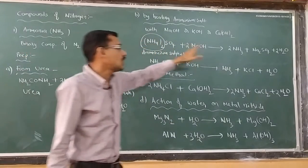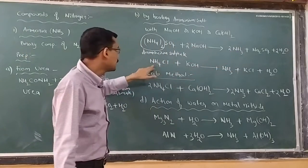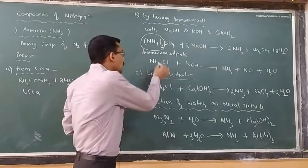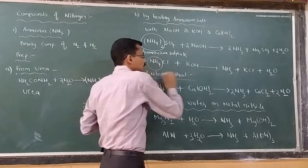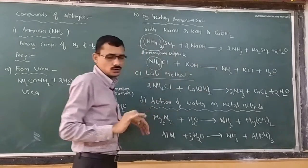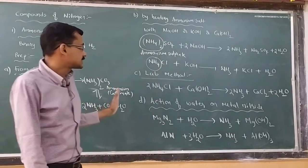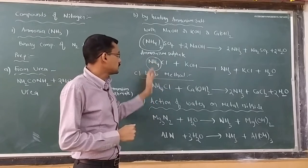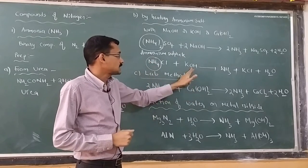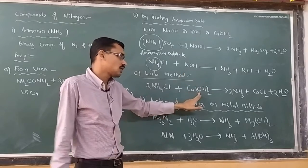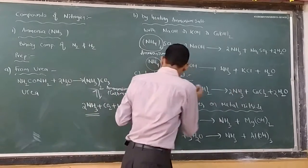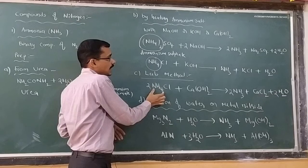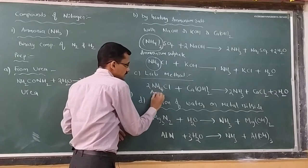Ammonium chloride converting into ammonia. This is very simple to identify. Next, lab method: we take ammonium chloride. Instead of potassium hydroxide, we take calcium hydroxide, which gives ammonia. Ammonium chloride is producing ammonia.